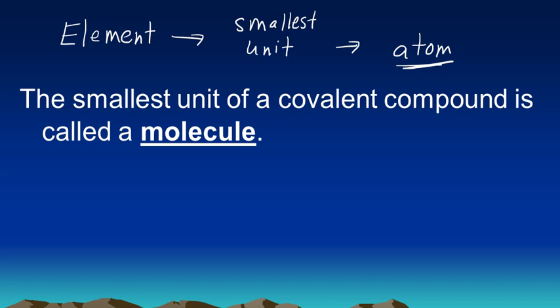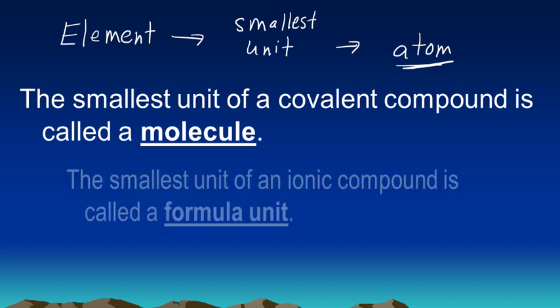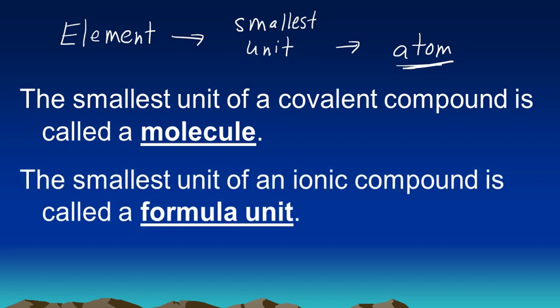But here we're talking about compounds, so we talk about molecules in covalent compounds. The smallest unit of a covalent compound is a molecule, and if you have an ionic compound these are not called molecules.